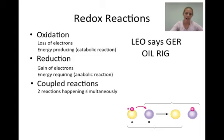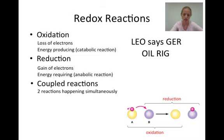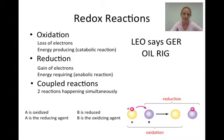This diagram illustrates the idea of a coupled reaction. Initially, molecule A has an electron and molecule B doesn't. In the reaction, molecule B takes the electron away from A, leaving A without the electron. Because A loses the electron, the reaction of A is an oxidation reaction. Because B gains an electron, the reaction of B is a reduction reaction. A is a reducing agent because it allows B to be reduced, and B is an oxidizing agent because it allows A to be oxidized.